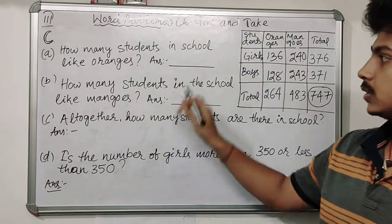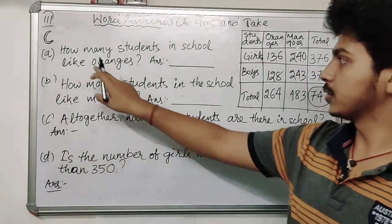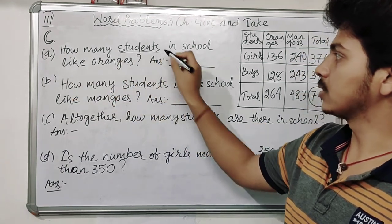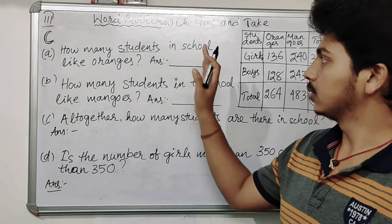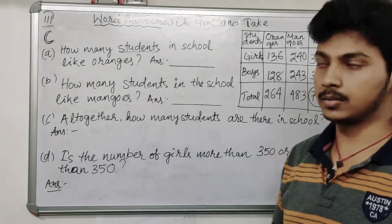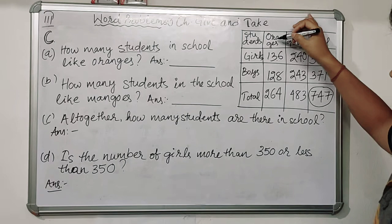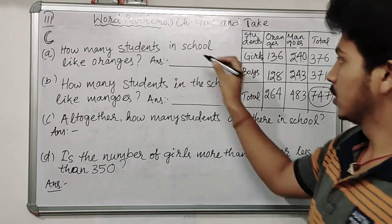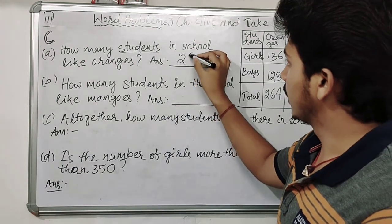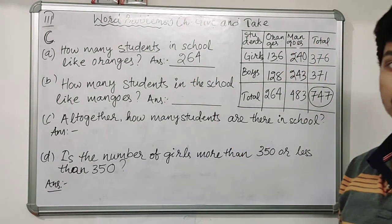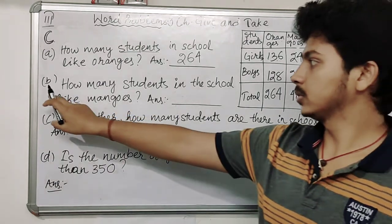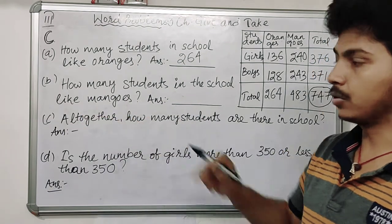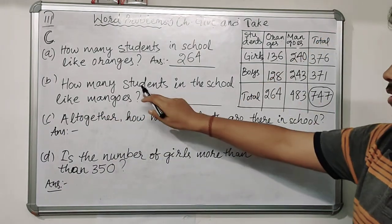Now let us solve the questions. The first question: how many students in the school like oranges? It is asking about students — that means boys as well as girls — who like oranges. Looking at the oranges column, the answer is 264 students.